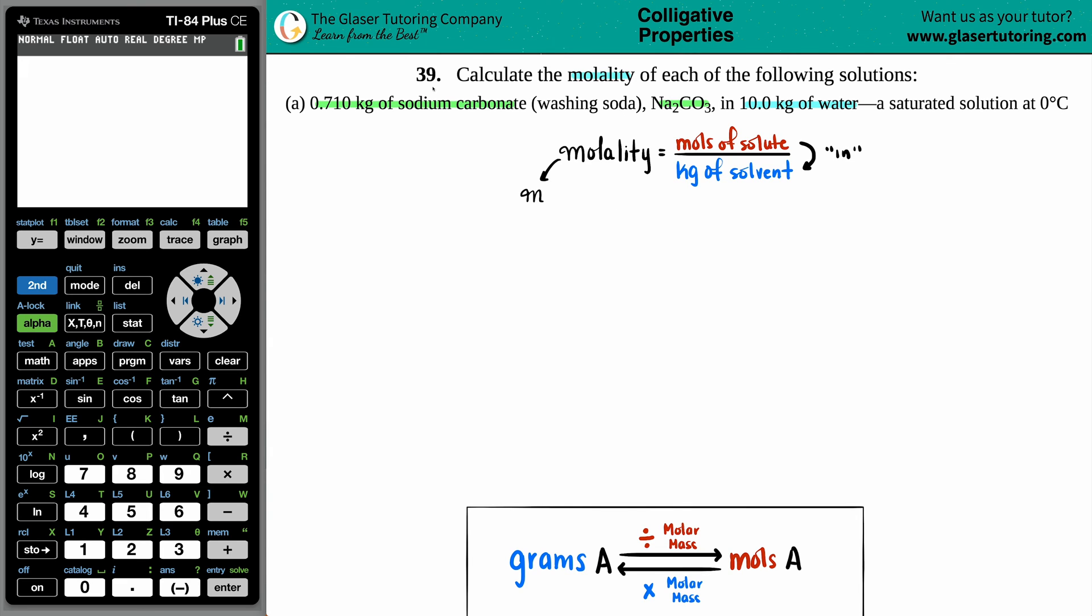Now, if we just look at the wording here, we have sodium carbonate, which is in the water. The solute is always in the solvent. So Na2CO3 has to be the solute. And the water, H2O, is the solvent.